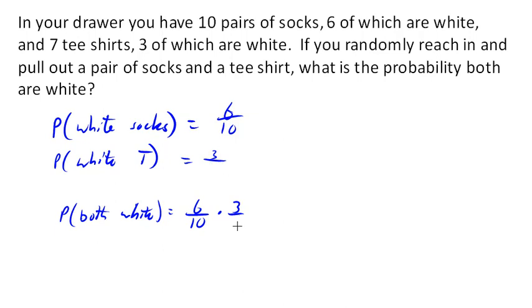So the probability of both of them being white is this. And we can simply multiply them because the probability of the t-shirt being white is not dependent upon the probability of the socks being white. So we can go ahead and multiply that.